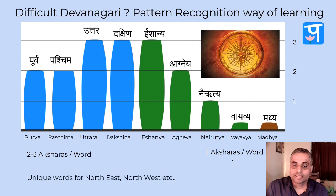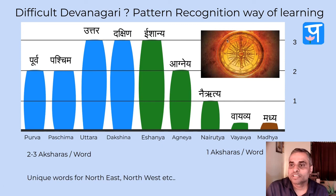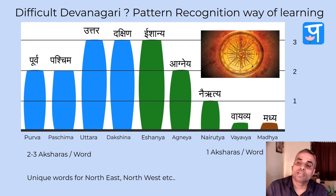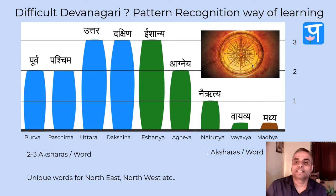In Sanskrit we have unique atomic words for northeast, northwest, etc. In English you may see abbreviations like NW or SE — these are called non-atomic words. In Sanskrit each direction like Ishanya or Vayavya is a single atomic word, which is a fundamental difference.